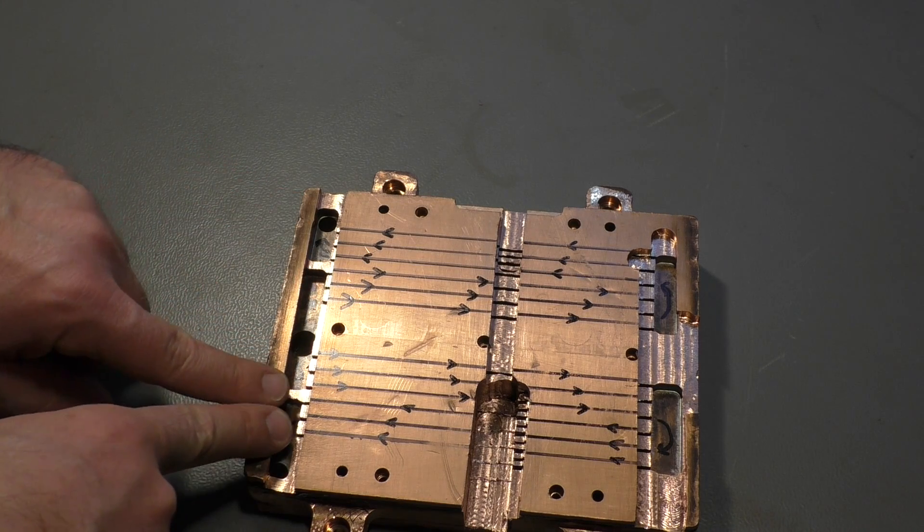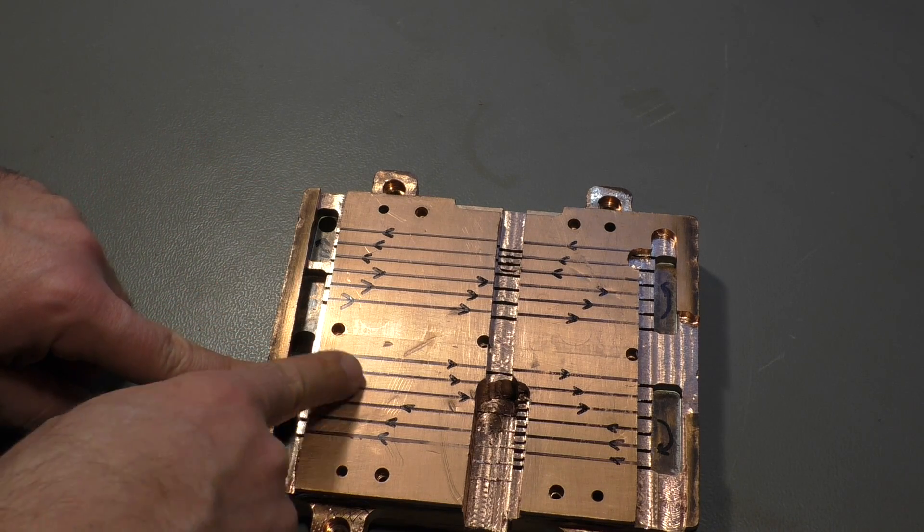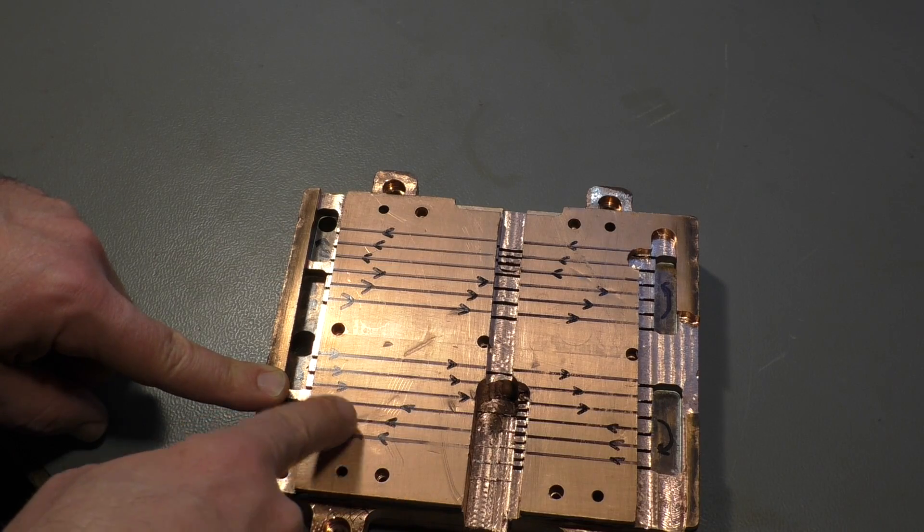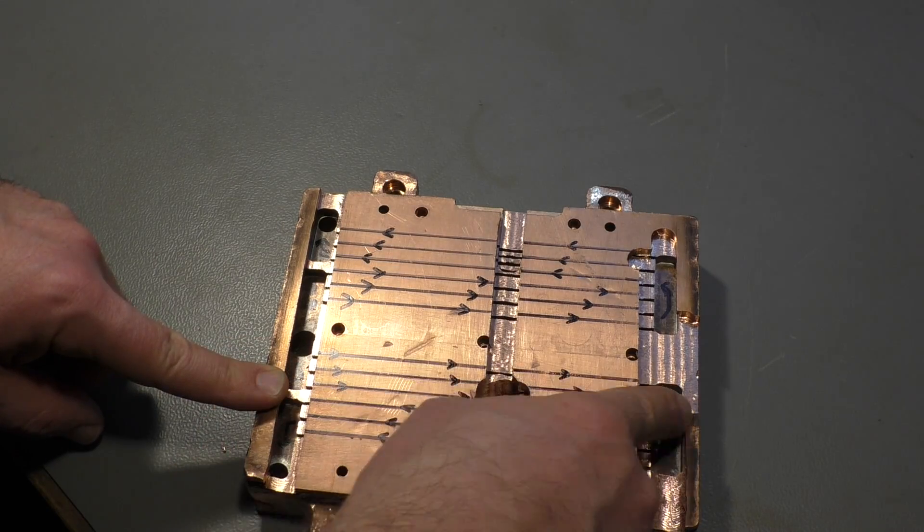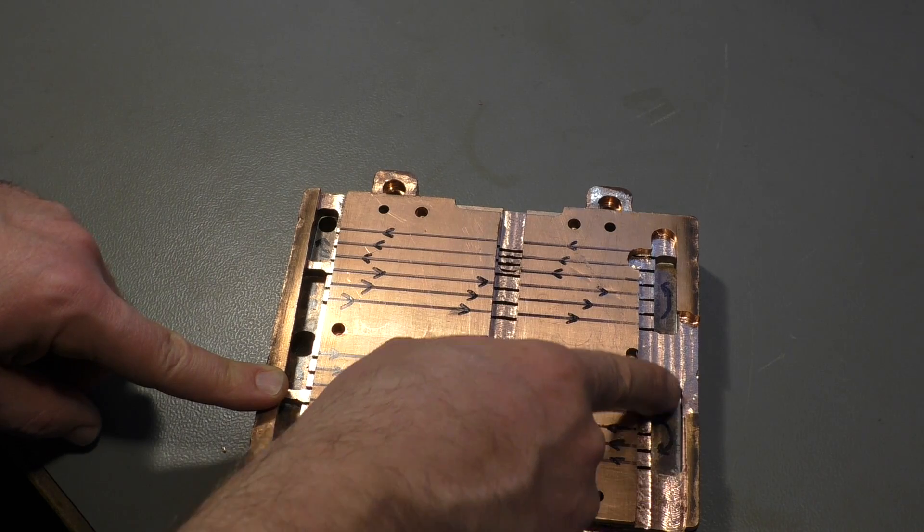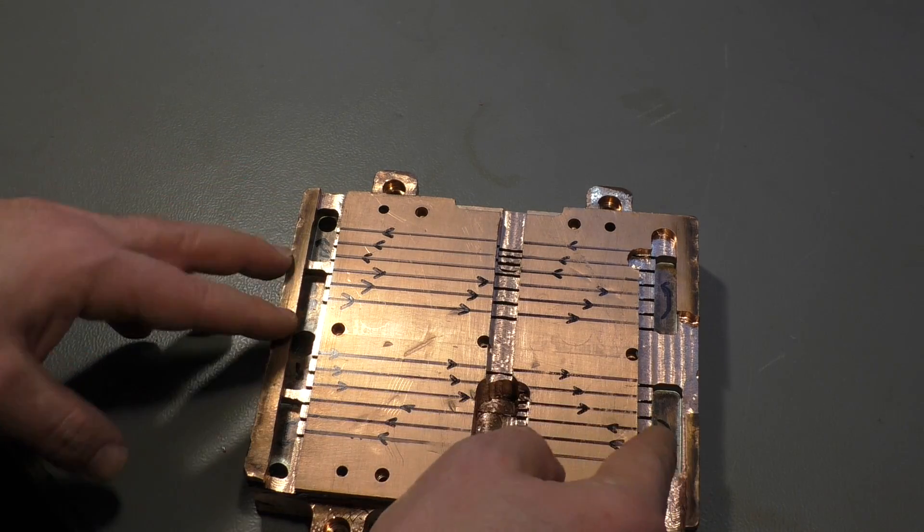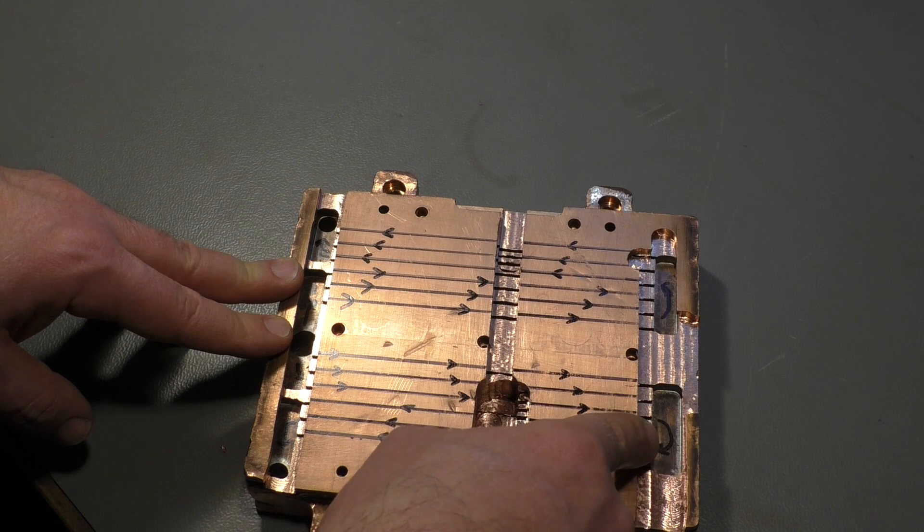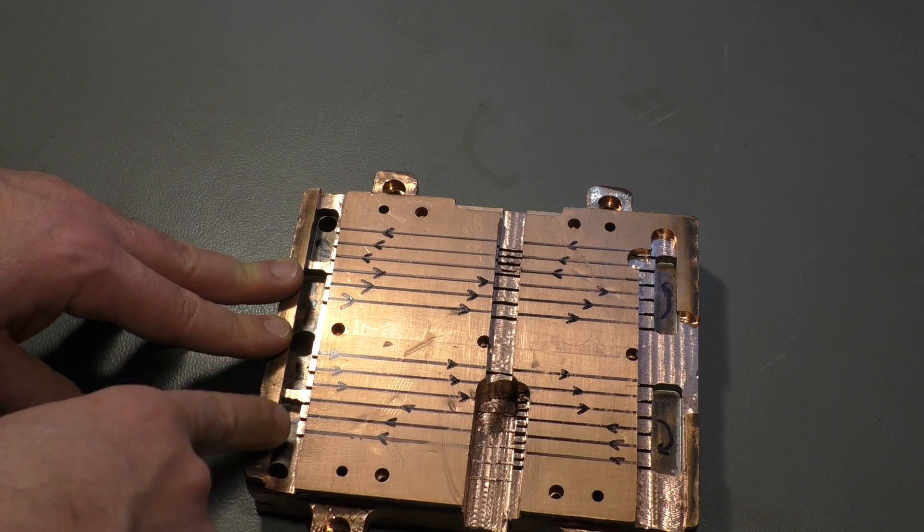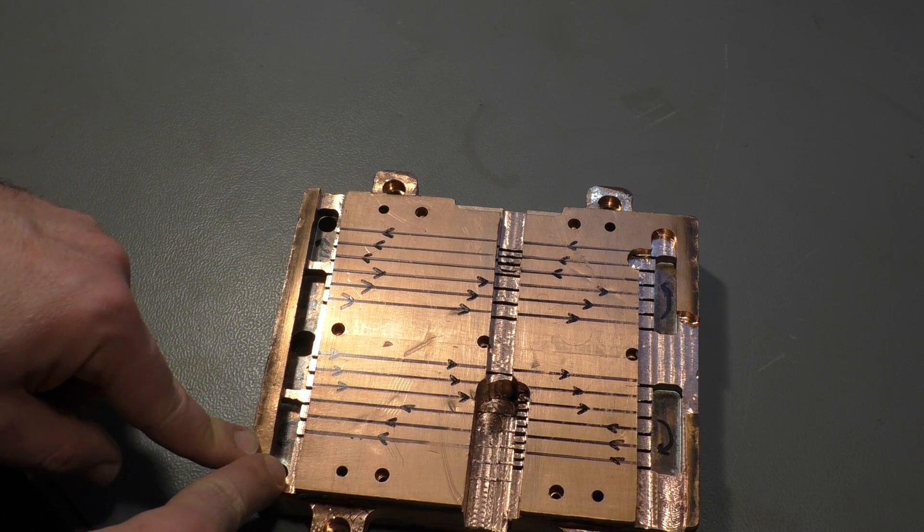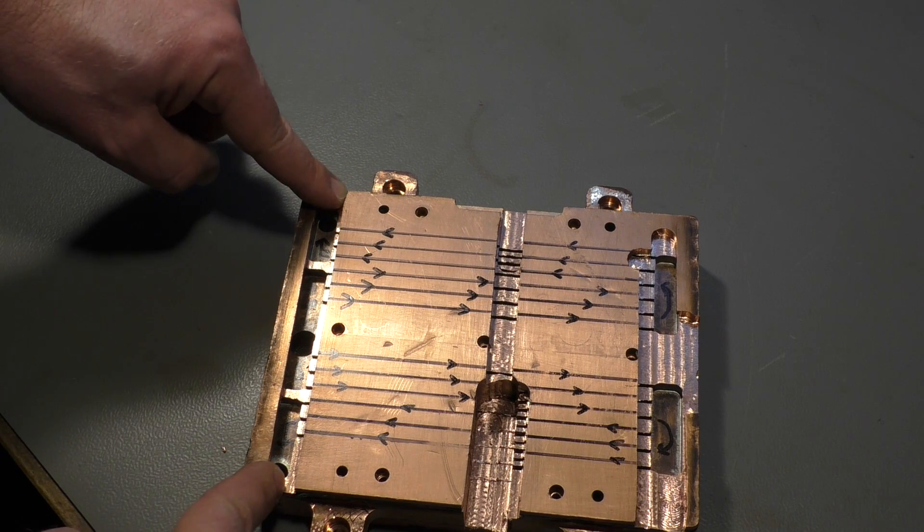And then there are slots underneath this plate that go in one direction to this opening here, or this cavity. Then the slots go back to this cavity. And then to the output tube on the left and then to the right side.